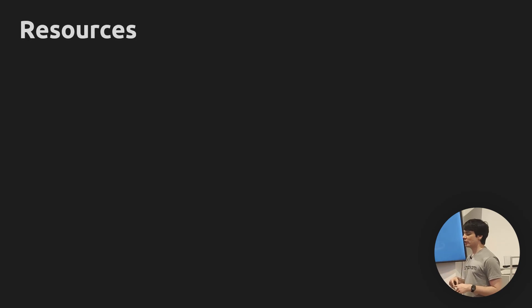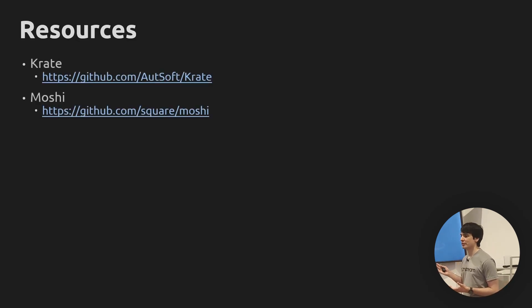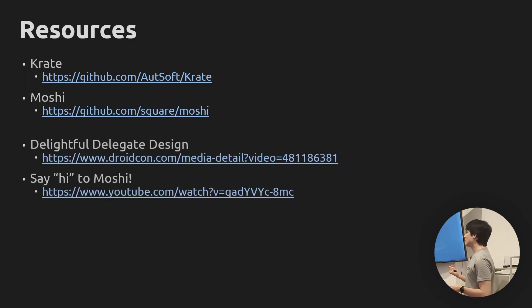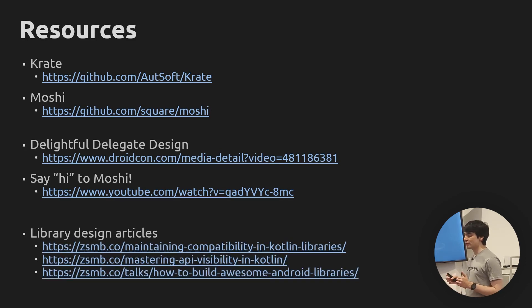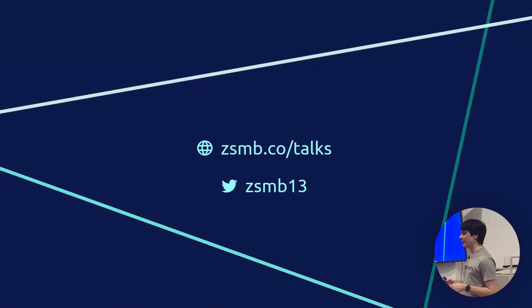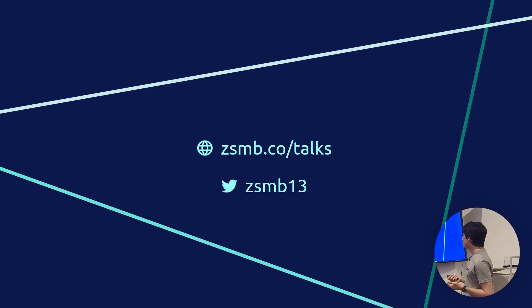That's a wrap for the talk. I'm going to have a bunch of resources on the next slide. I would recommend checking out both of these libraries — Crate is my own, and Moshi you should be using unless you need multi-platform support for your serialization needs. I've given other talks about both of these libraries which you can check out. You can find all of that, the slides, and more on the link provided. If you're not following me on Twitter yet and you want to hear about Android and Kotlin stuff, you can find me there as well.